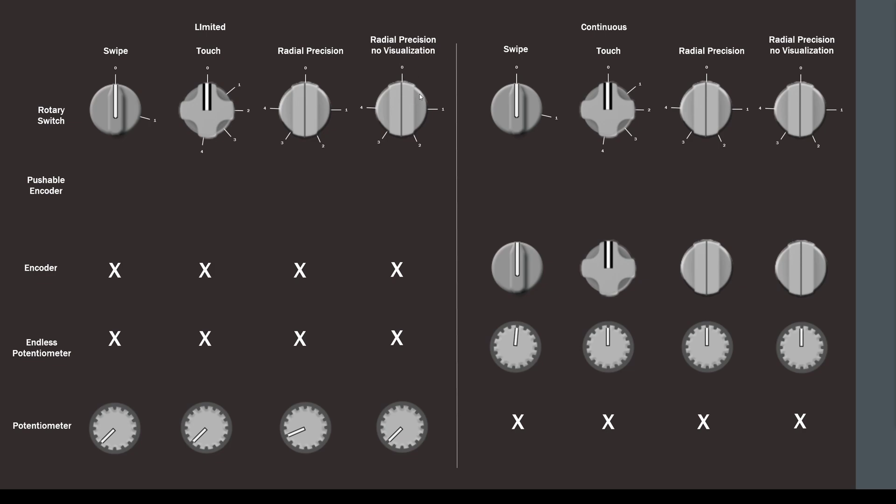The radial precision mode with visualization turned off is the same thing, only it doesn't show you the line. So it's a little bit harder to know exactly what's happening. Some people don't like the lines showing up because they wouldn't be there in a real aircraft, so it's basically up to the profile designer or you can change it yourself.